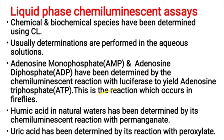The next part is liquid phase Chemiluminescent Titrations. The liquid phase Chemiluminescent Titrations can be useful for chemical and biochemical species. Determinations are usually performed in aqueous or polar solutions. Adenosine monophosphate (AMP) and adenosine diphosphate (ADP) have been determined by using Chemiluminescent reactions with luciferase to yield adenosine triphosphate (ATP). AMP plus ADP gives ATP in the presence of luciferase, and during this reaction light is emitted.